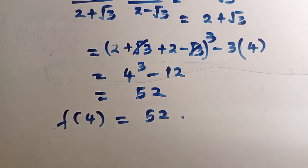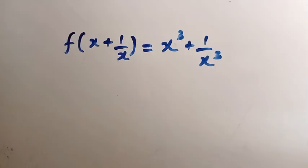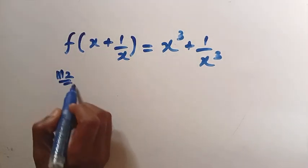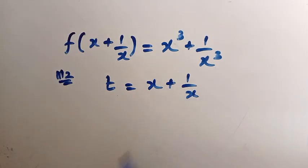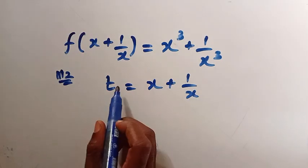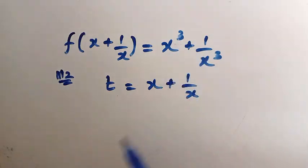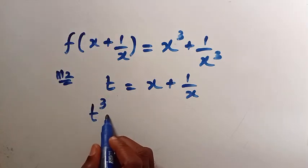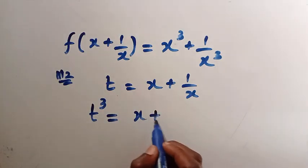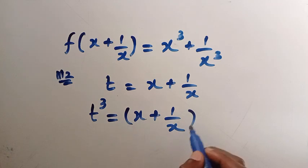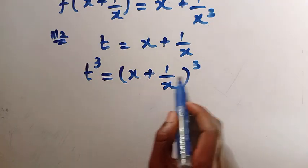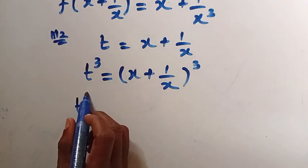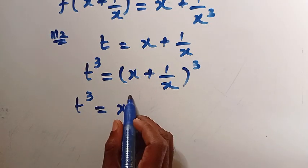Now let's consider the second method. Suppose I let t equal x plus 1 divided by x. I need to get x cubed plus 1 over x cubed. Taking the cube of both sides, we have t cubed equals (x plus 1 over x) all raised to power 3.